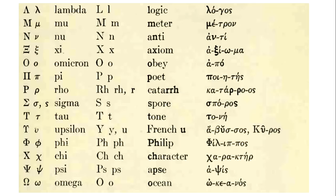Next we have the letter mu, which we remember through 'meter.' Next we have the Greek letter nu, which we remember through the word 'ante.' Then we have xi, which we remember through 'axiom.'